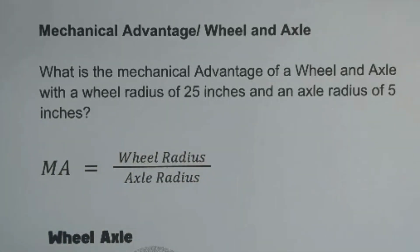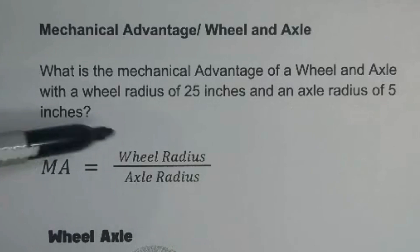What is the mechanical advantage of a wheel and axle with a wheel radius of 25 inches and an axle radius of 5 inches? Well, the formula you use is wheel radius divided by axle radius.